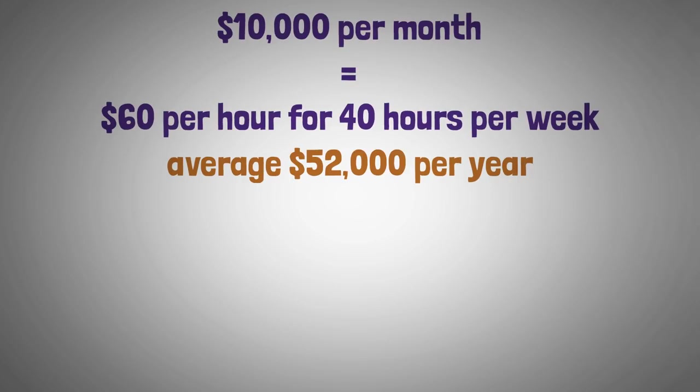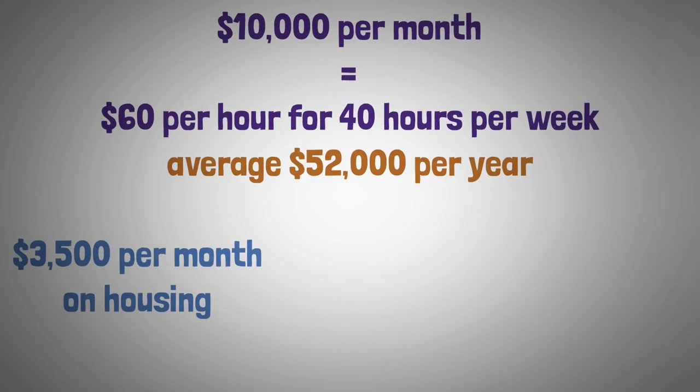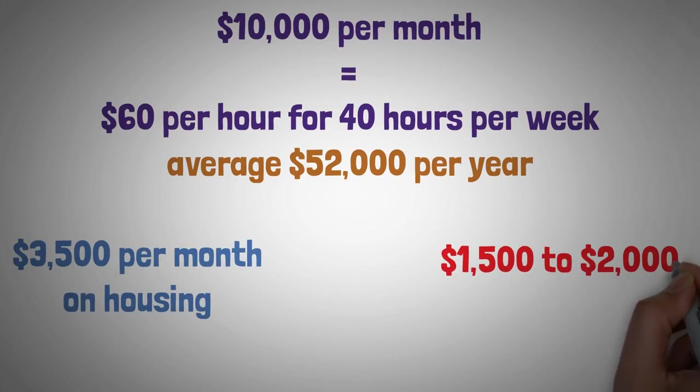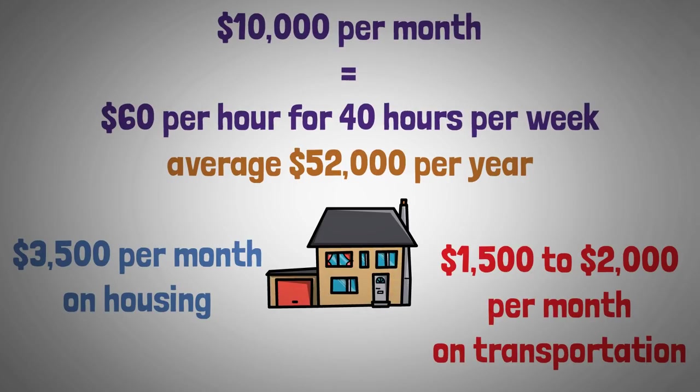Bringing in $10,000 per month would allow you to comfortably spend up to $3,500 per month on housing and $1,500 to $2,000 per month on transportation when abiding by traditional budgeting metrics. That should be enough to have a comfortable home and newer, reliable means of getting around.